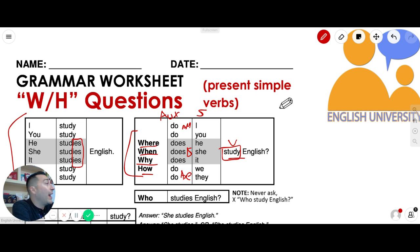They want to know about the verb. They want to know where study, or why study, or how study, or who study, or what study.